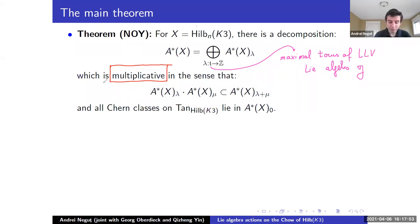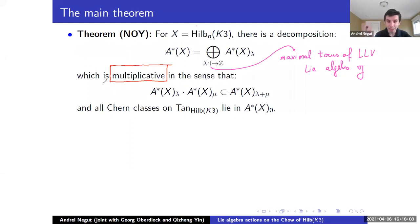Also, all the Chern classes from the tangent bundle of X lie in the zero-weight piece of this decomposition. So we see exactly how the maximal torus acts on the Chern classes of the tangent bundle — it acts on them by annihilating them because they are in this zero-weight piece.